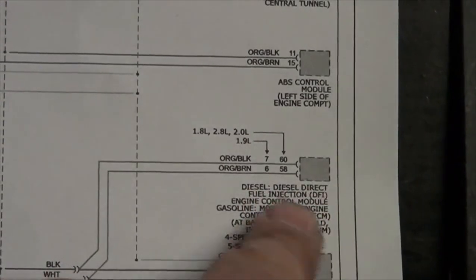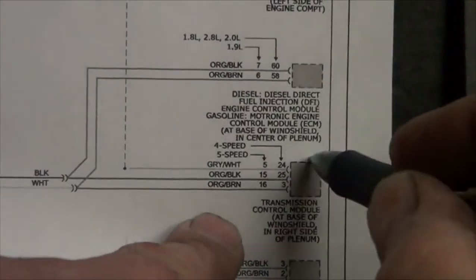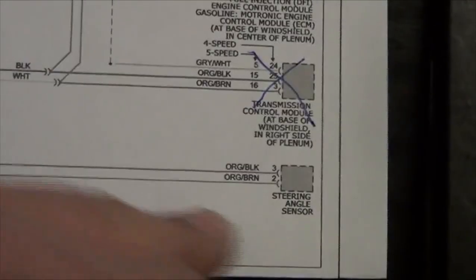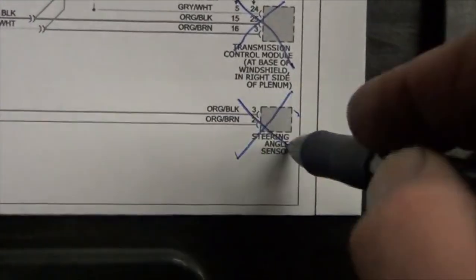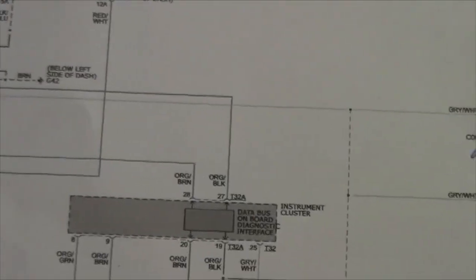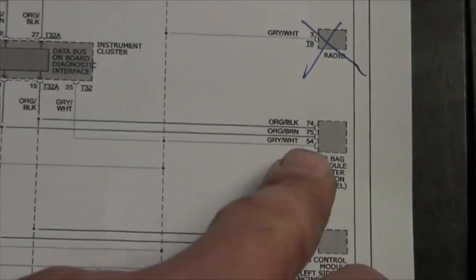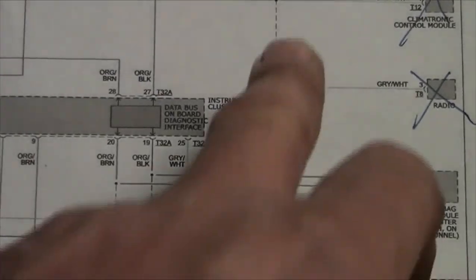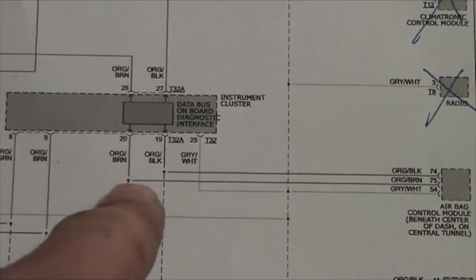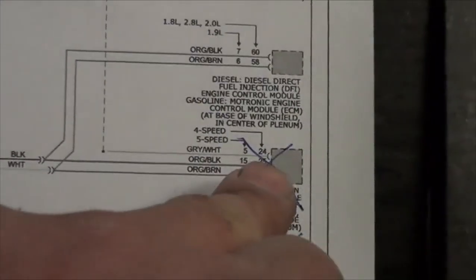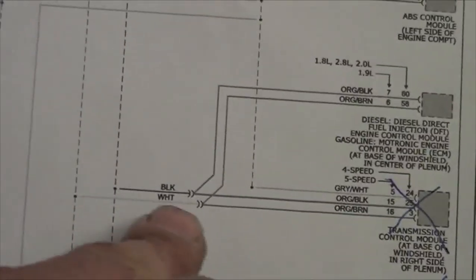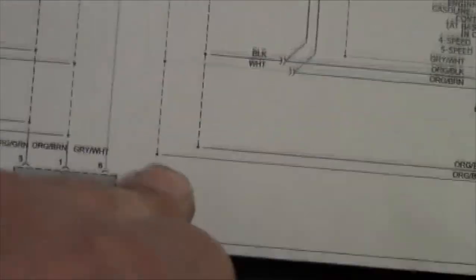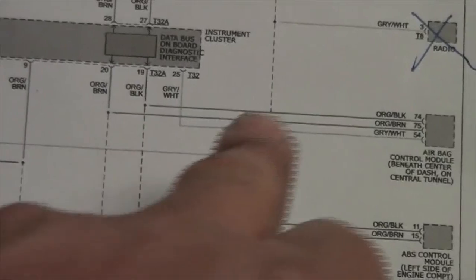The schematic points out the engine computer here, transmission computer — this is a manual car, not equipped — and steering angle sensor for ESP, also not equipped. It does seem that the airbag module is connected to the K line. We have a communication on the K line, and then a data bus network on the orange and black wires going to airbag and ABS, branching off to the engine computer. There's also a third data bus network — this car is not equipped with the transmission computer, so we can scratch that off.